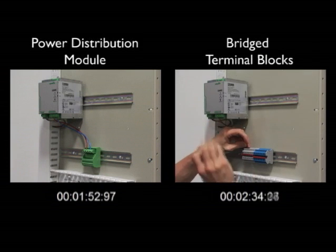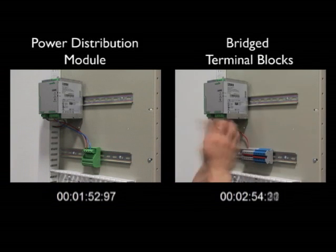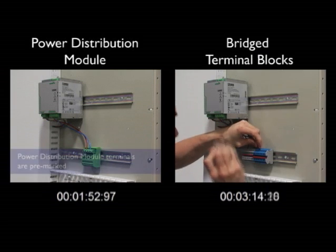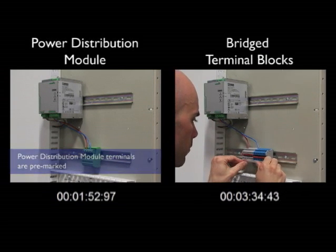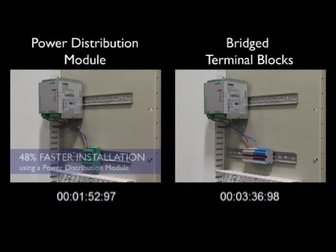We sped up time on the right while keeping the clock synchronized to the end of this terminal block installation. Finally, after the wires are terminated and markers are added, the installation is complete. 1 minute 53 seconds versus 3 minutes 37 seconds.